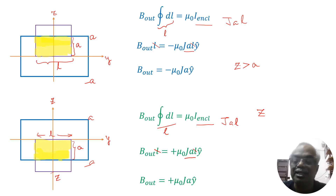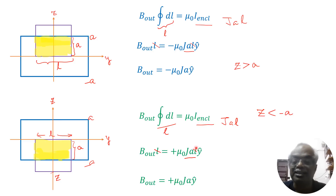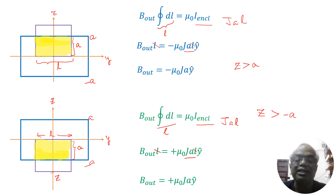To summarize: the magnetic field outside the slab is minus mu-naught J A y-hat for Z greater than A, and plus mu-naught J A y-hat for Z less than minus A. These are the results obtained from this problem. Thank you very much for watching and supporting me.